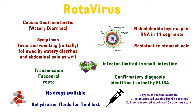There are two types of vaccines available. The first type is a live attenuated vaccine for the G1 serotype, which is the most common type that causes rotavirus. The second vaccine is a live reassorted virus covering five common rotavirus strains.